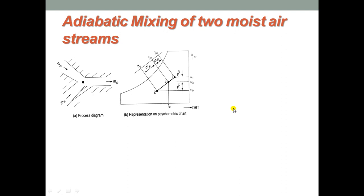Next is adiabatic mixing of two streams of moist air. Two streams enter at sections 1 and 2 with mass flow rates ma1 and ma2, and the mixture exits at section 3 as ma3. The final state of the mixture has a new state condition, for example mixing of fresh and return air in air conditioning or cold storage. The mixing process and its representation on the psychrometric chart are shown in the figure.